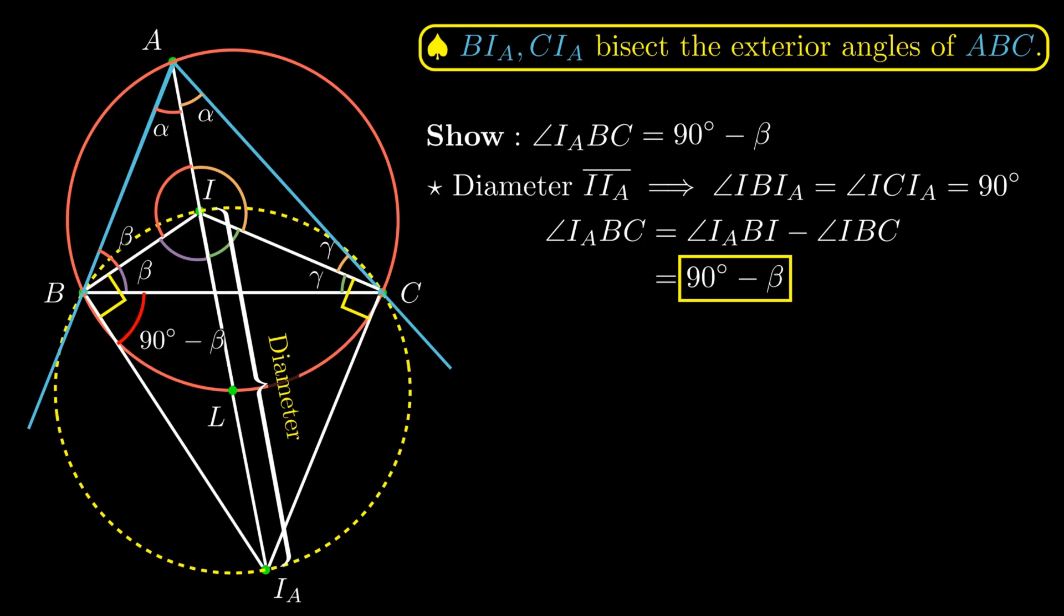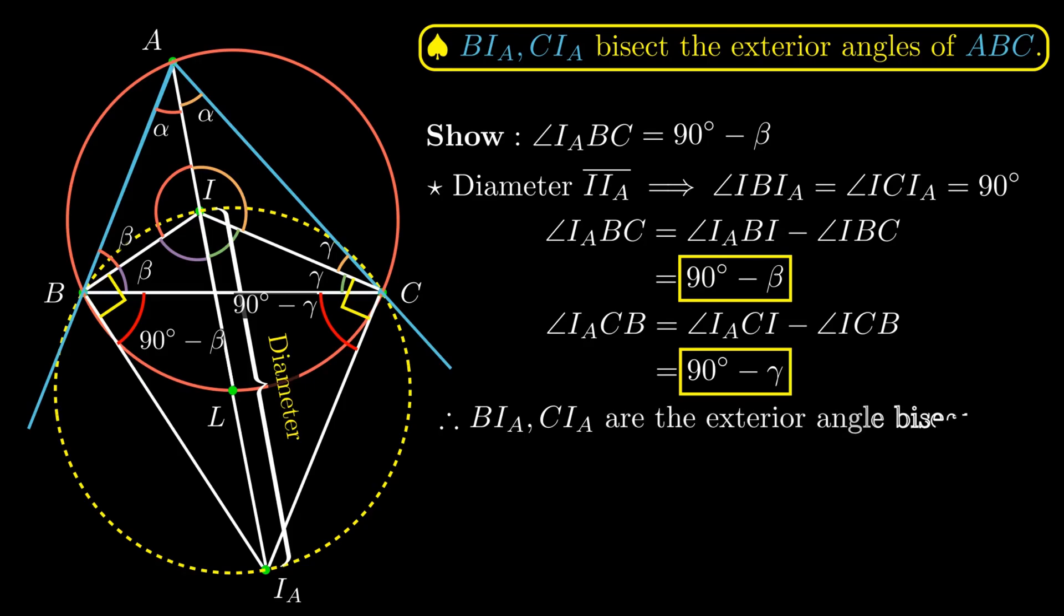Similarly, with some calculations, it can be easily shown that angle I sub A, C, B is also equal to 90° minus γ. Therefore, this proves that the lines BI sub A and CI sub A are indeed the exterior angle bisectors of angle B and angle C.